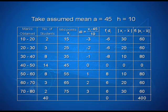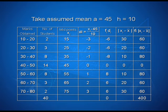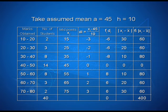Now we find the product of f_i and d_i: 2 into minus 3 gives minus 6, 3 into minus 2 gives minus 6, 8 into minus 1 gives minus 8, 14 into 0 gives 0, 8 into 1 gives 8, 3 into 2 gives 6, and 2 into 3 gives 6. The sum of these observations is 0.